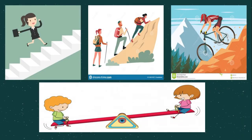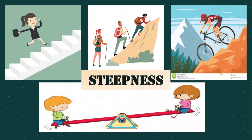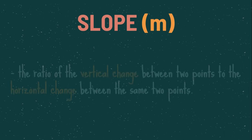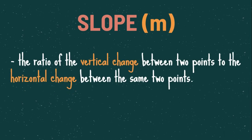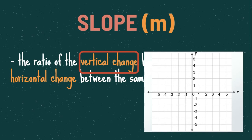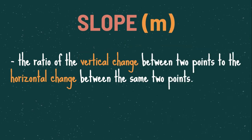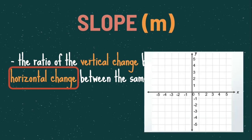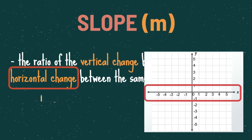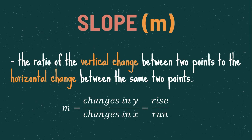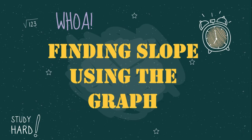This picture shows stiffness — when you say stiffness, it means the incline in a linear equation. It is also called the slope of the line. Slope is denoted by a small letter m. It is the ratio of the vertical change between two points to the horizontal change between the same two points. Slope is equal to the changes in y over the changes in x, or rise over run.